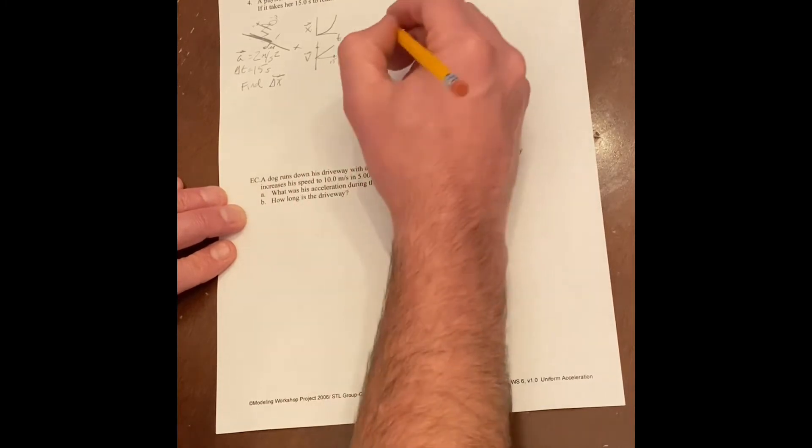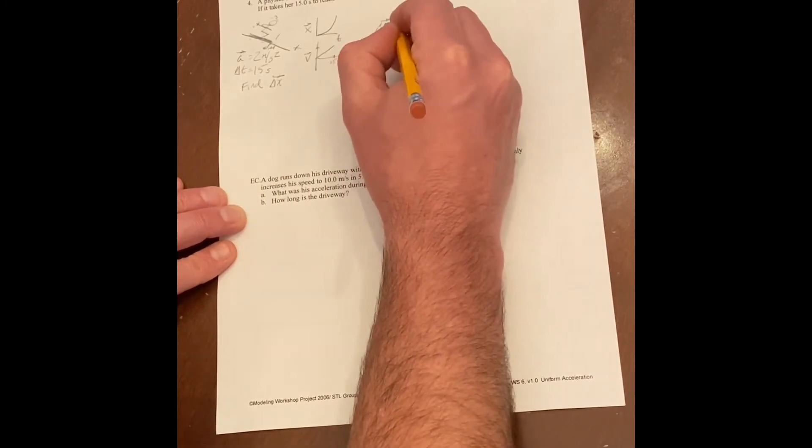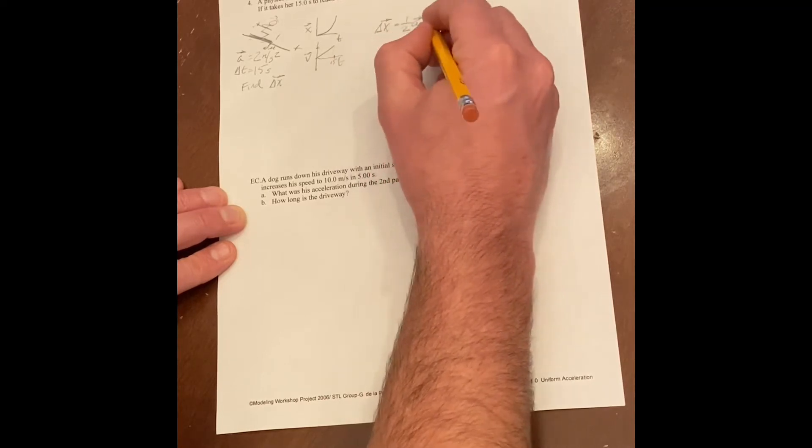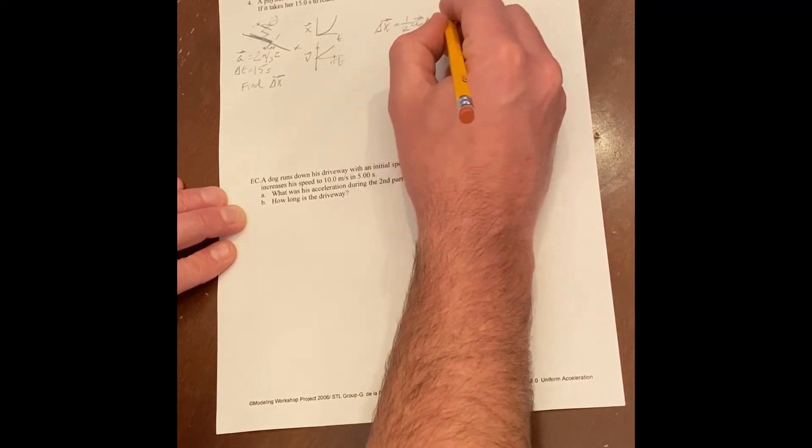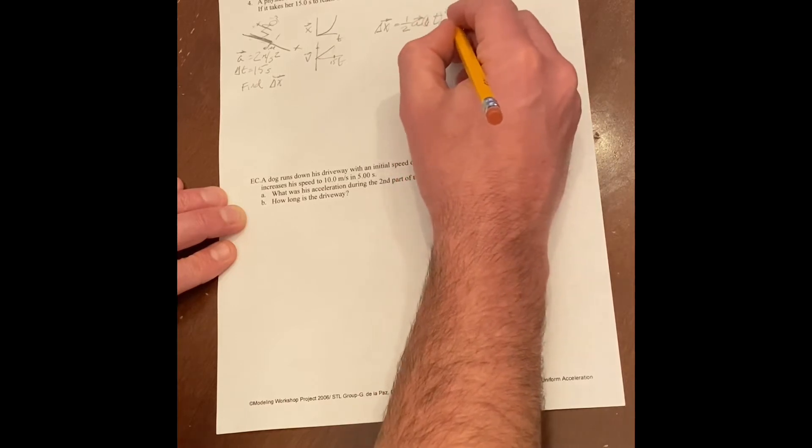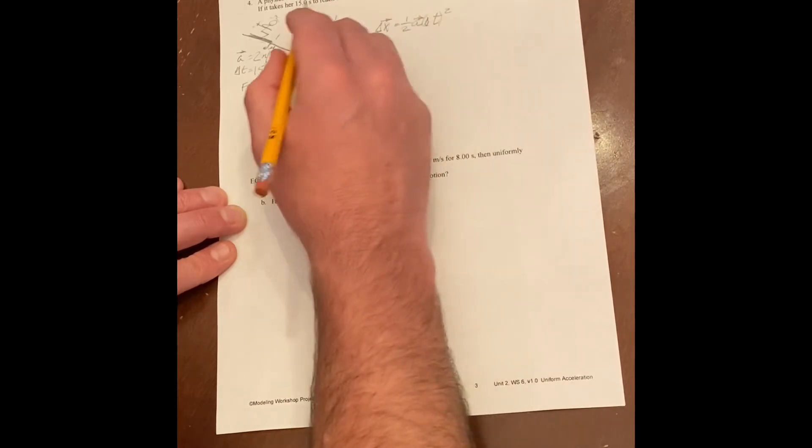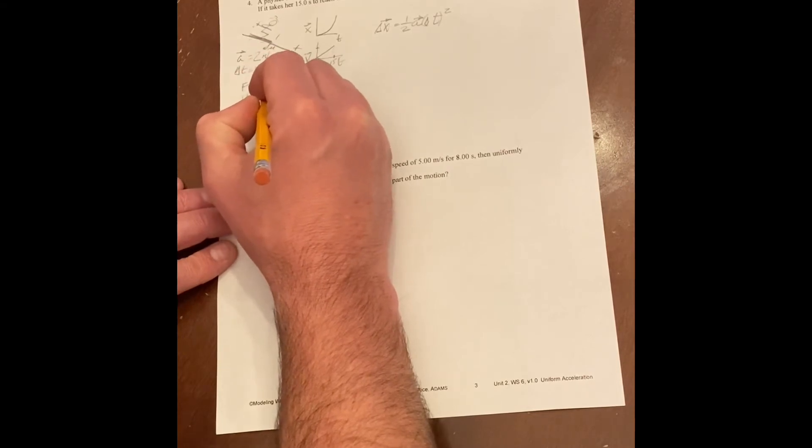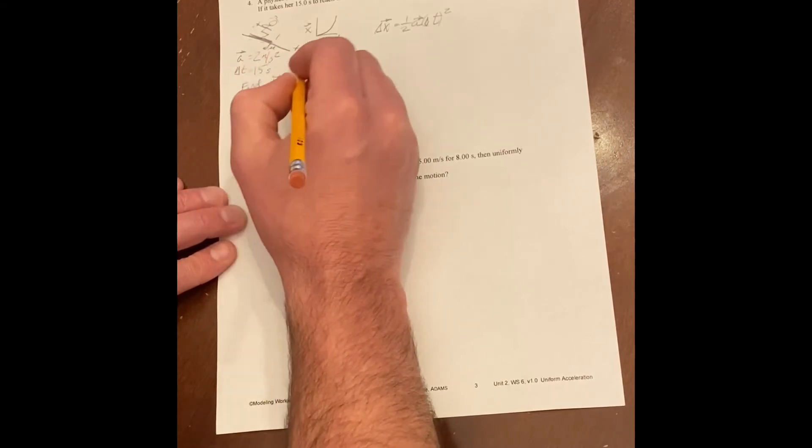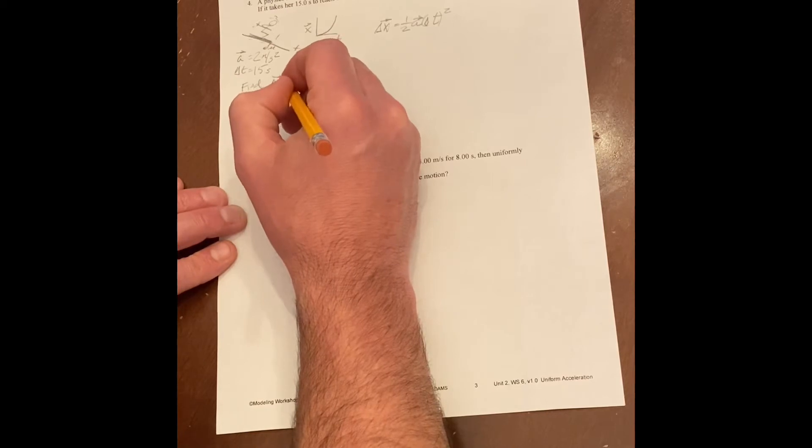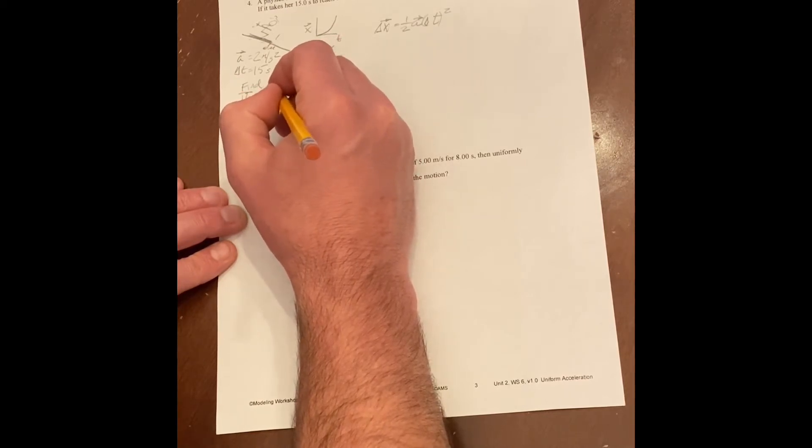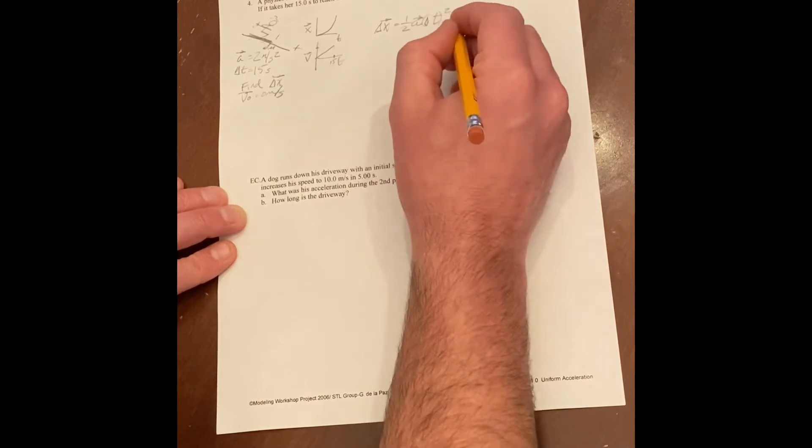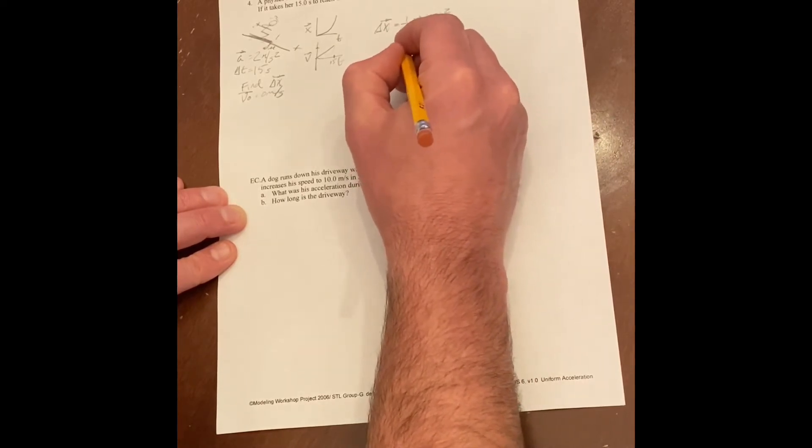But I thought we could use that big equation we started with the other day. The change of position equals one half the acceleration times the change in time squared. Now that originally came with plus a velocity at time zero, but we're going to assume that her starting velocity is zero from rest. So let's decide that starting velocity is zero.